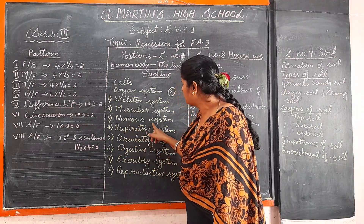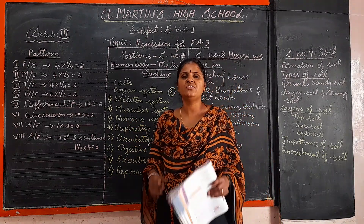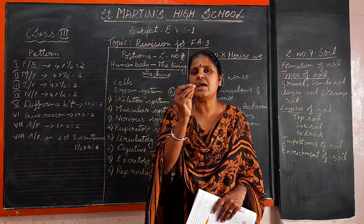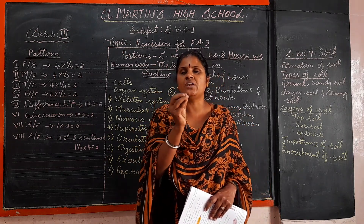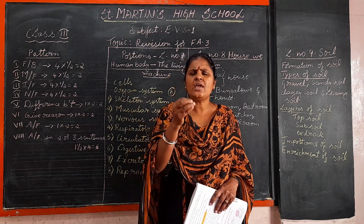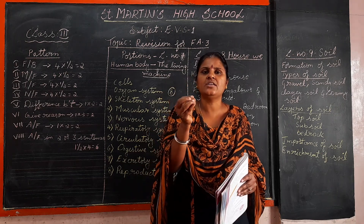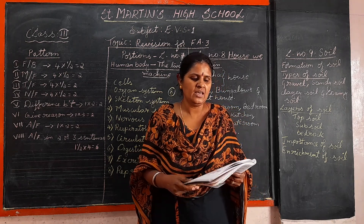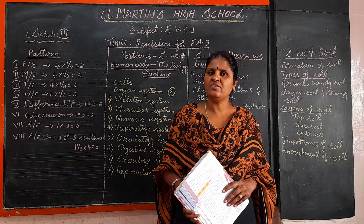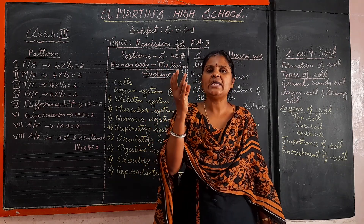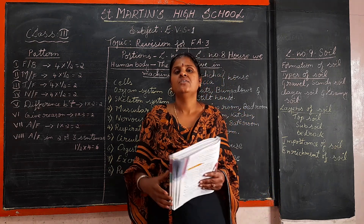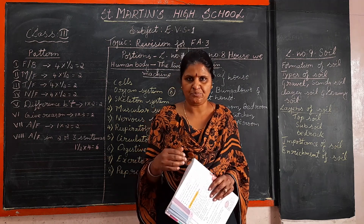The nervous system is made up of nerves — thin wire-like tubes connected throughout the body. There are five sense organs: eyes, nose, ears, tongue, and skin. Through this nervous system we feel things.